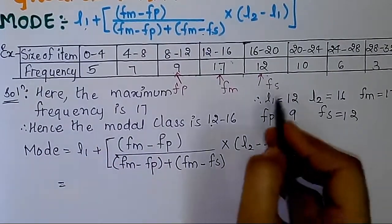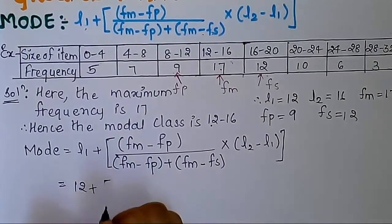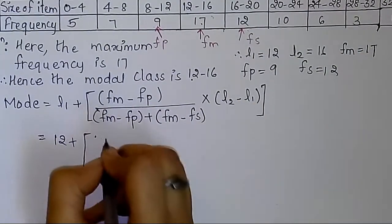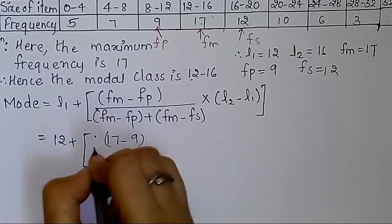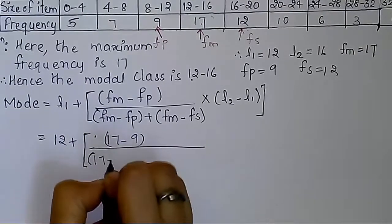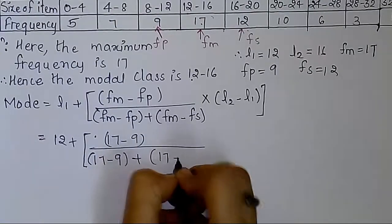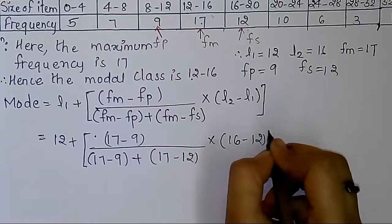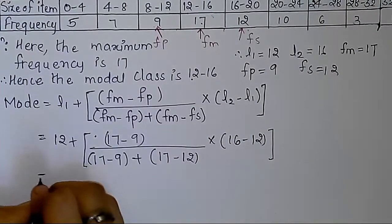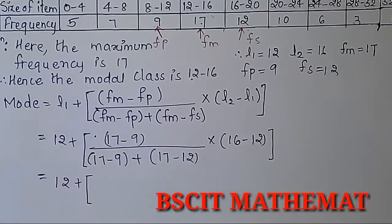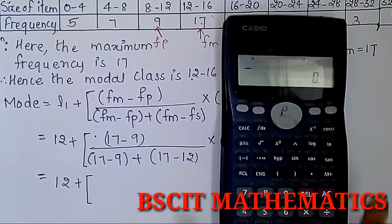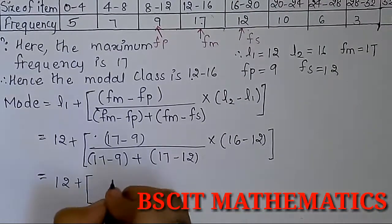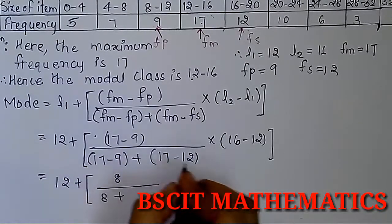So l1 is 12, plus fm minus fp means 17 minus 9, upon 17 minus 9 plus fm minus fs means 17 minus 12, into l2 minus l1 which is 16 minus 12. Now simplifying: 17 minus 9 equals 8, and 17 minus 12 equals 5.